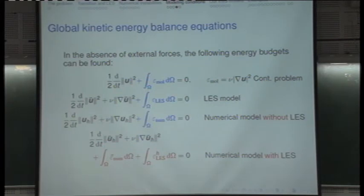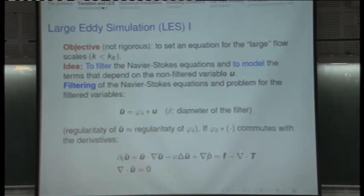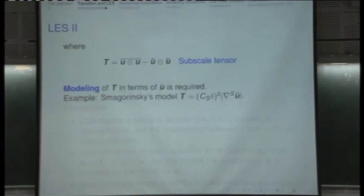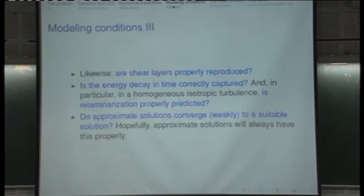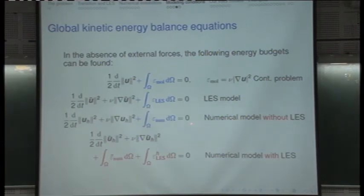What happens if you introduce an LES model? You have the same energy balance as before, plus the dissipation introduced by the LES model — from the term divergence of T, where T is the subgrid stress tensor. What happens if you use just the Navier-Stokes equations with the numerical dissipation introduced by the method? The method has dissipation. If you discretize the LES model as a physical model using finite elements, you will have two contributions: one from the numerical dissipation of your scheme, and the other from the LES model.